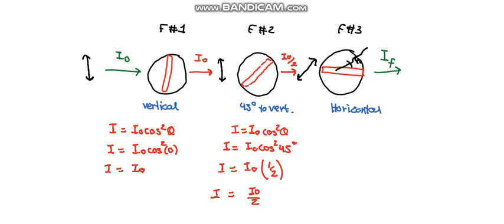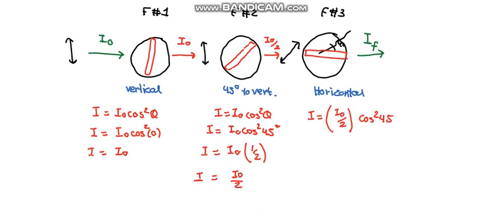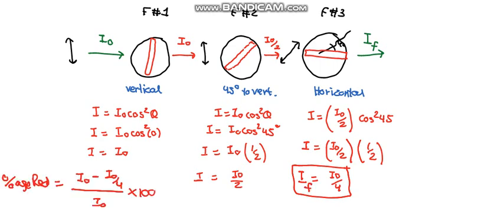For filter number three, the theta is 45 degrees. Our expression is I equals I naught over 2 cos square 45. Our final IF is I naught over 4. The percentage reduction is I naught minus I naught by 4 divided by I naught into 100, which gives us 75 percent reduction.